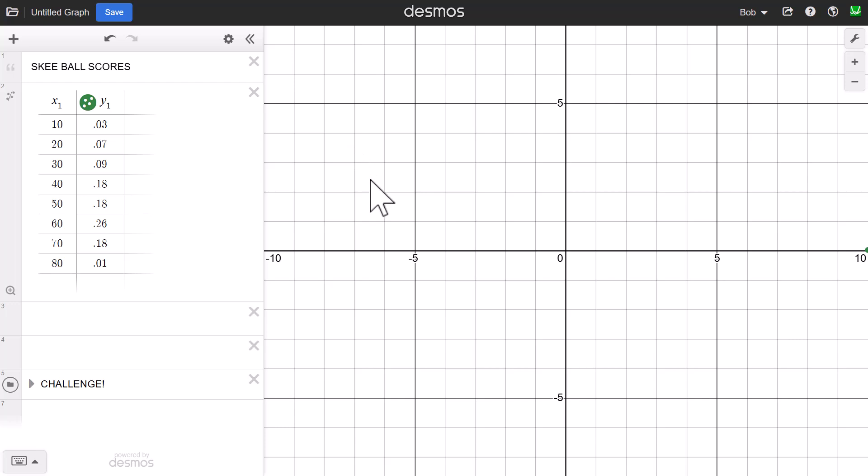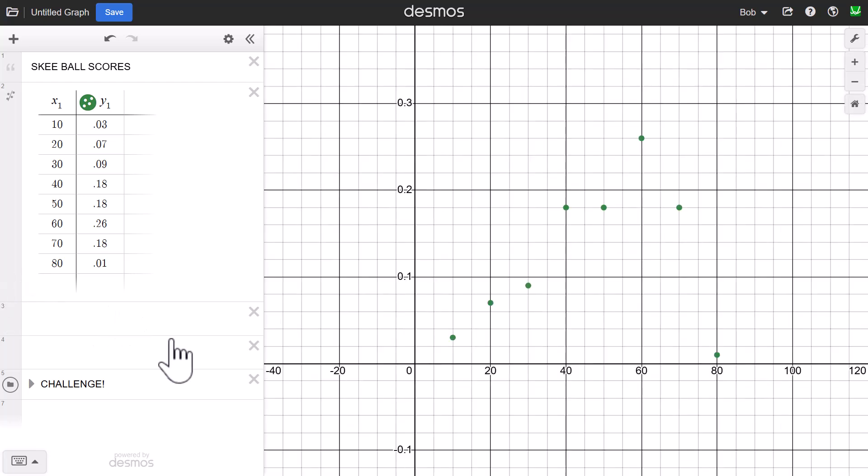Some people might note that you could also use Lists to do this, and that's true. I've chosen to use a table here for one very specific reason, and that's because I would like to display this distribution. So once I have these values in, I can go down to Zoom Fit here and click this, and I can see the probability distribution, get an idea of its shape, and maybe make some conjectures about what the mean of this distribution might be.